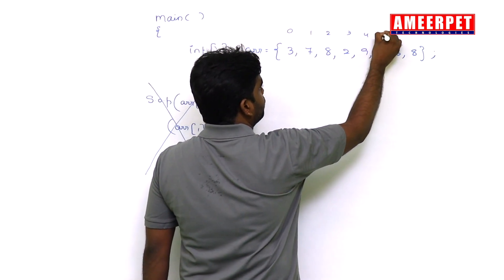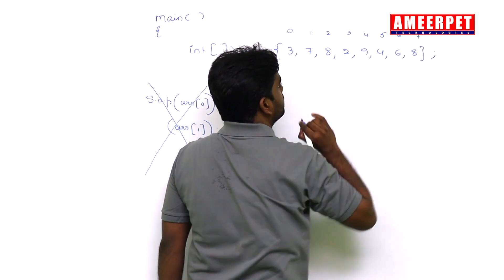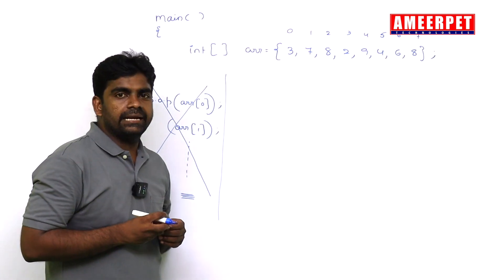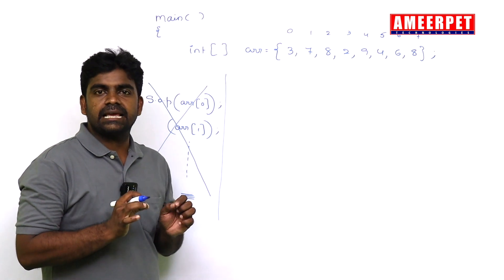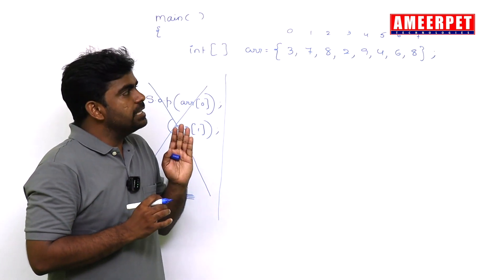So total, how many elements are there? Eight elements. Length is 8. So repeat the loop from 0 to length minus 1, which is nothing but 7. Here, repeating the loop for int i = 0.